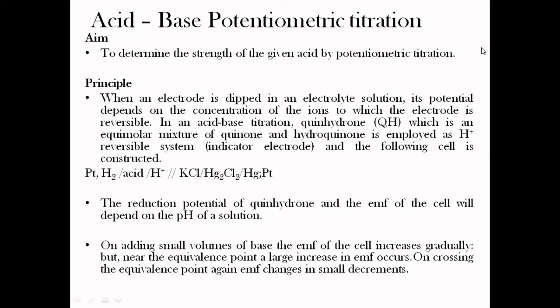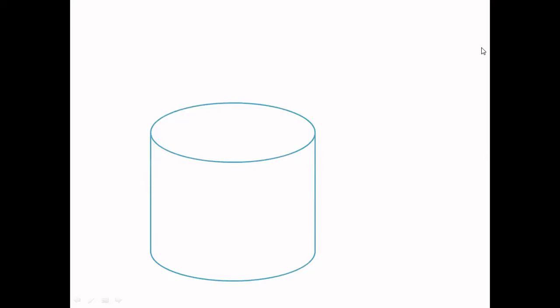There are different types of electrodes whose potential depends on the concentration of H+. A simple example is the hydrogen electrode. Another example is the glass electrode, whose potential also depends on the concentration of H+. In practical applications, we use the quinhydrone electrode, which depends on the concentration of H+. Quinhydrone is a mixture of quinone and hydroquinone used as an H+ system. It is reversible and is taken as the indicator electrode. The reference electrode used is the calomel electrode. Together, the quinhydrone electrode and calomel electrode form an electrochemical cell whose potential depends on H+ ion concentration.